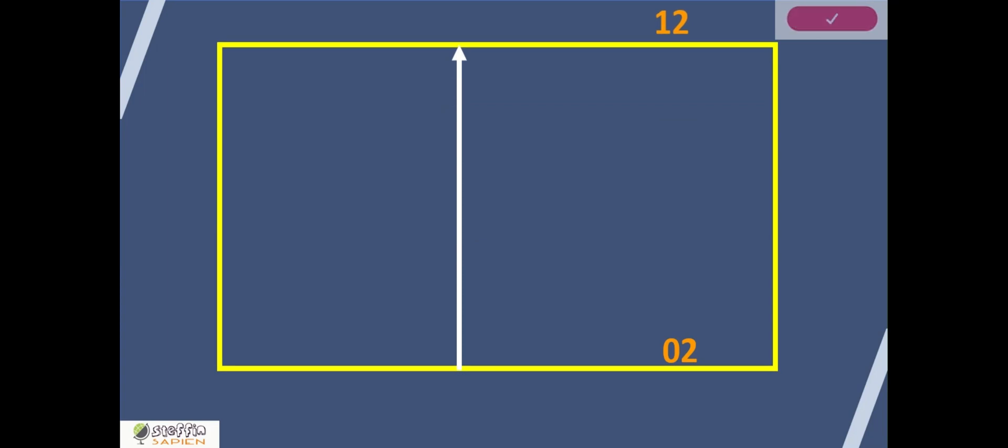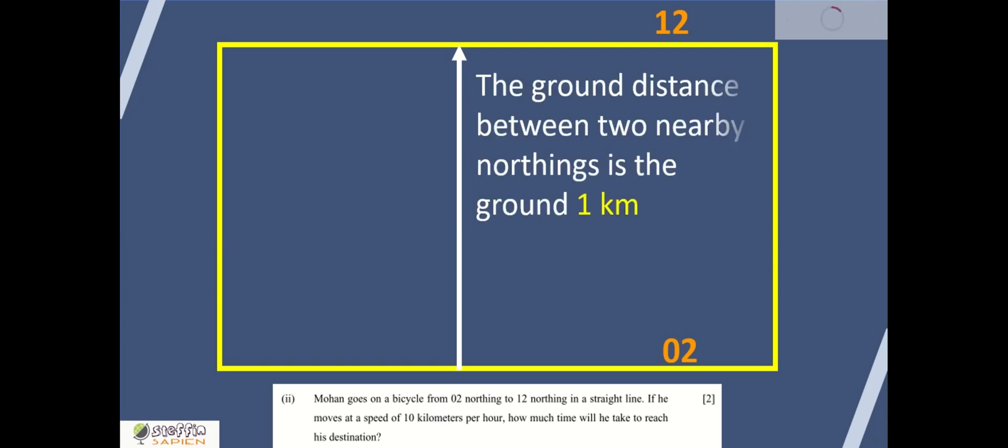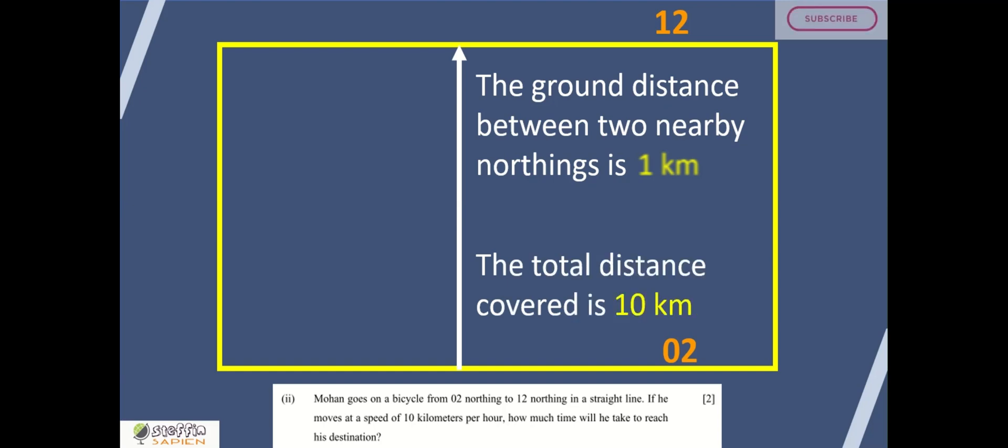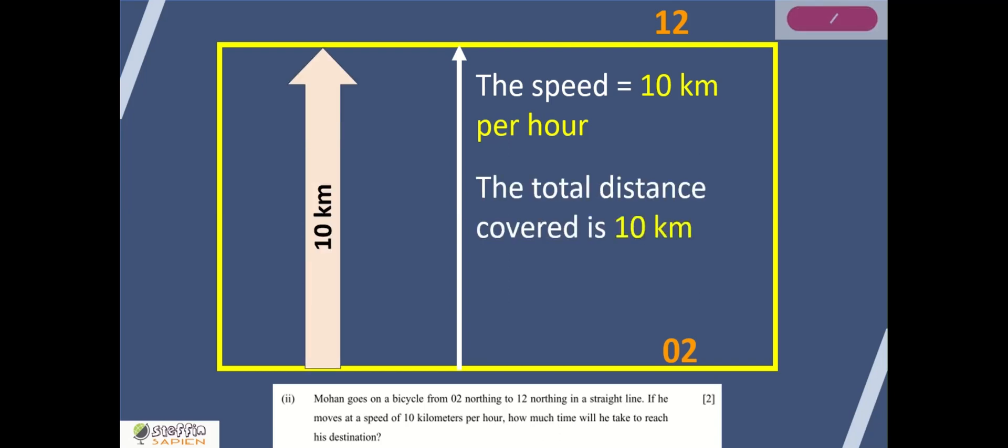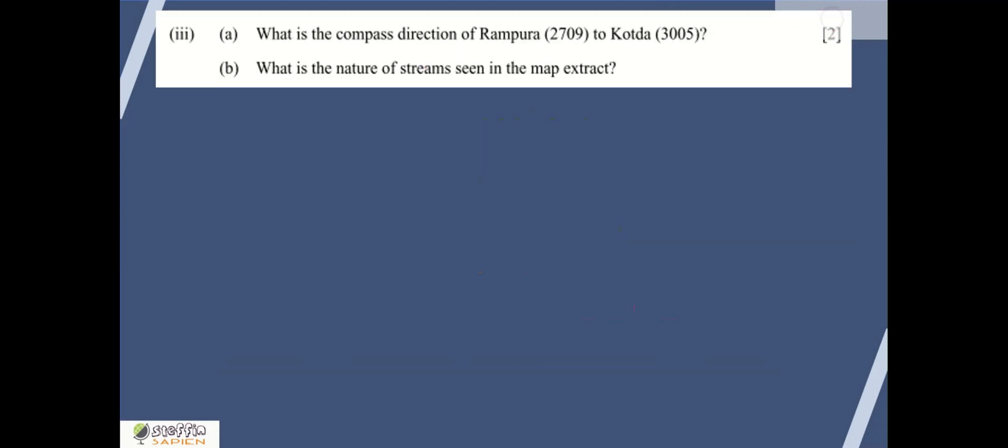It is given that the speed is 10 kilometers per hour. So here Mohan is traveling 10 kilometers and the speed is 10 kilometers per hour. Total distance covered is 10 kilometers, speed is 10 kilometers per hour. So the answer is one hour. Mohan takes one hour to travel this distance from 02 to 12 northing.